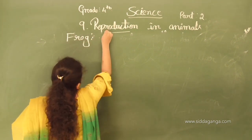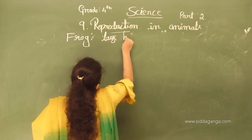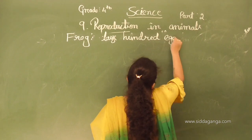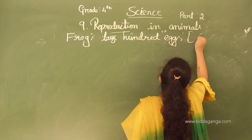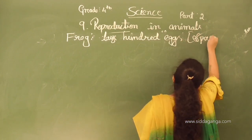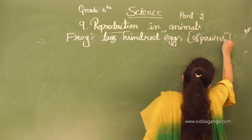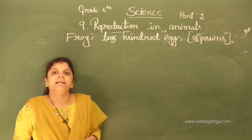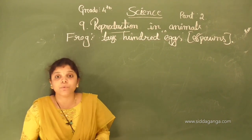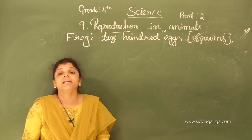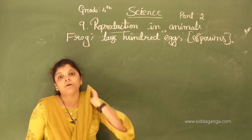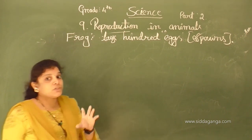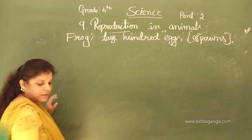Frog lays hundreds of eggs, called spawns. Frogs lay their eggs in water. After laying eggs, each egg grows into a tadpole.